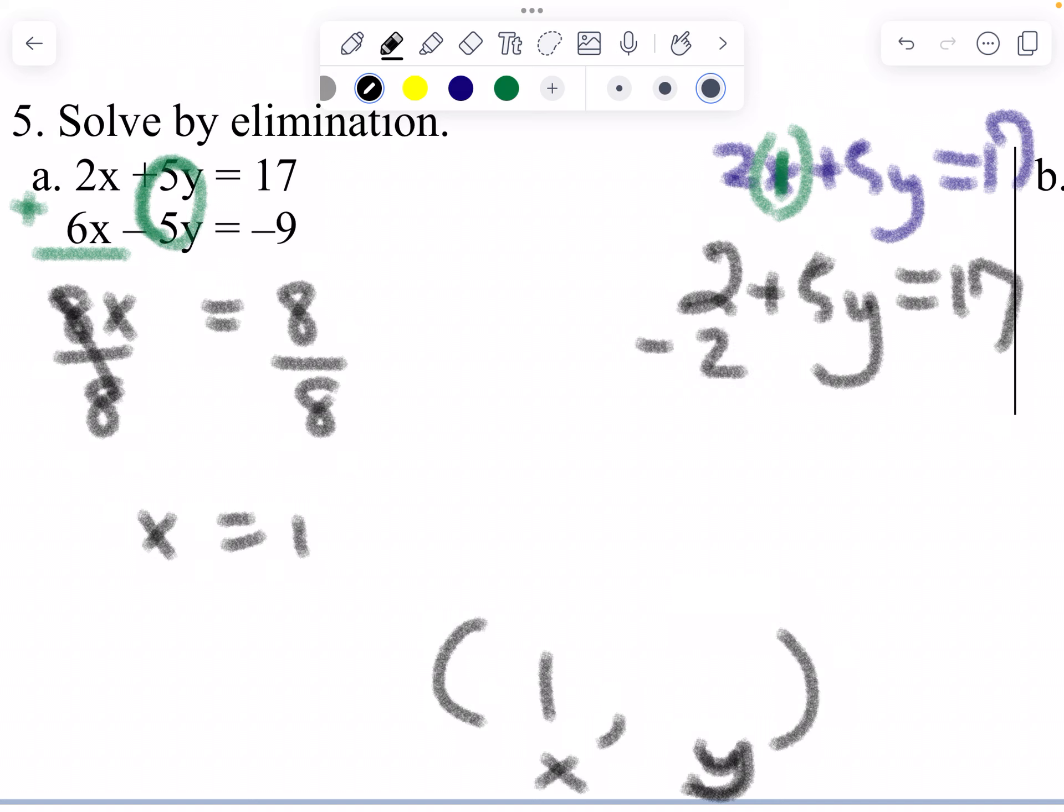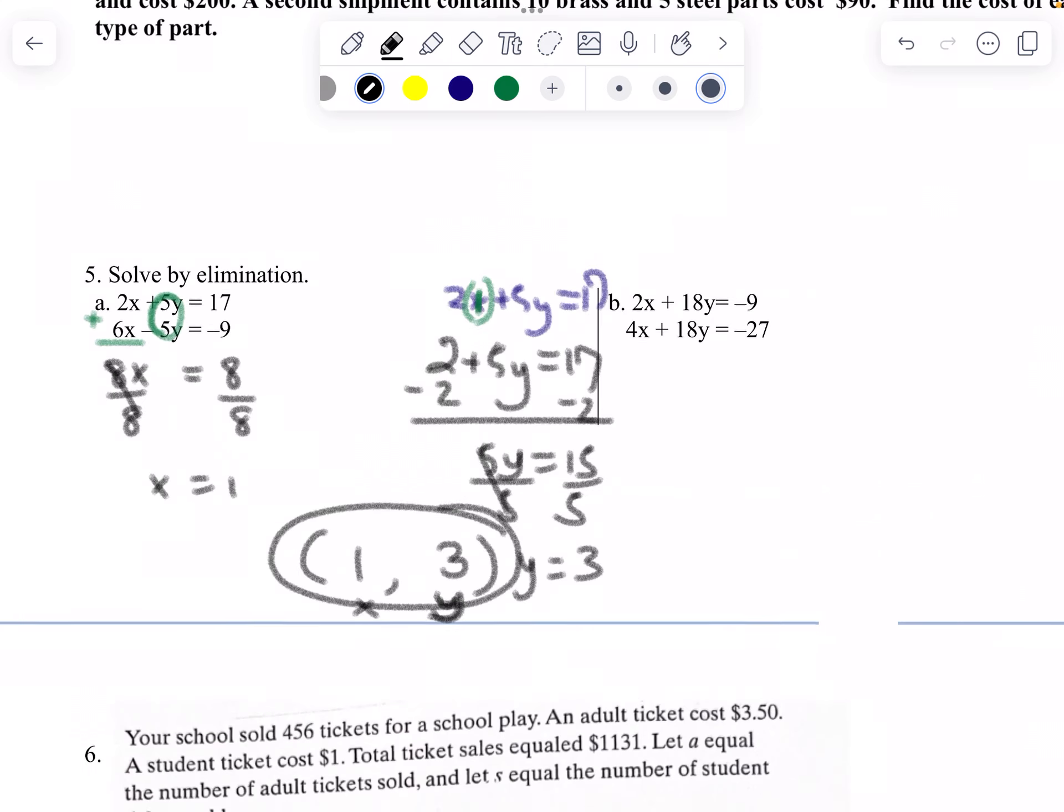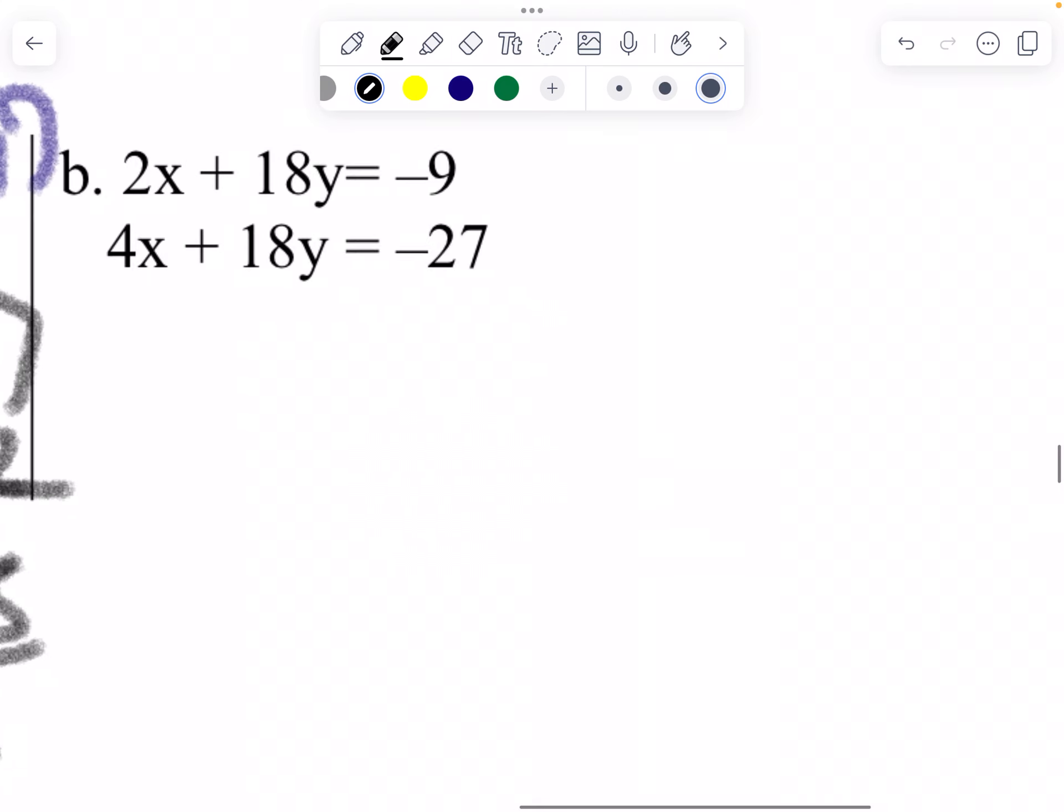You're going to solve for this y right here. Minus 2, minus 2. Get 15 equals to 5y. Divide by 5. Divide by 5. y is 3. That's your answer there.